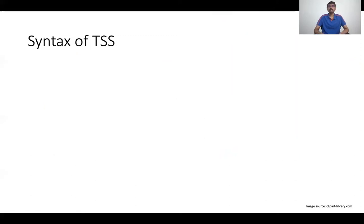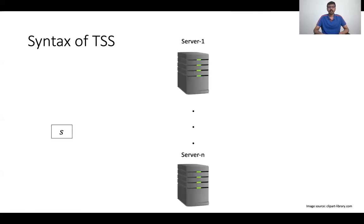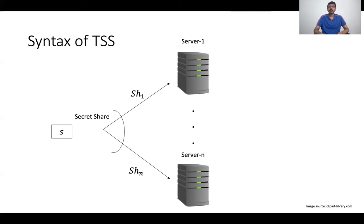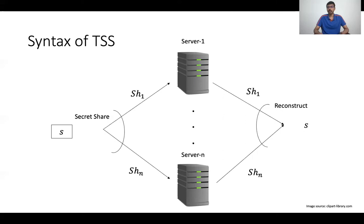Let me first describe the syntax of a traceable secret sharing. Just like any other secret sharing scheme, a traceable secret sharing consists of a sharing phase where you take a secret from the dealer — Alice in this case — and split it into n shares SH1 to SHn, which are sent to the servers. There is also a reconstruction phase, which takes in at least t shares that were given to the servers and reconstructs the secret. For privacy, we require that any t minus one shares reveal no information about the underlying secret.